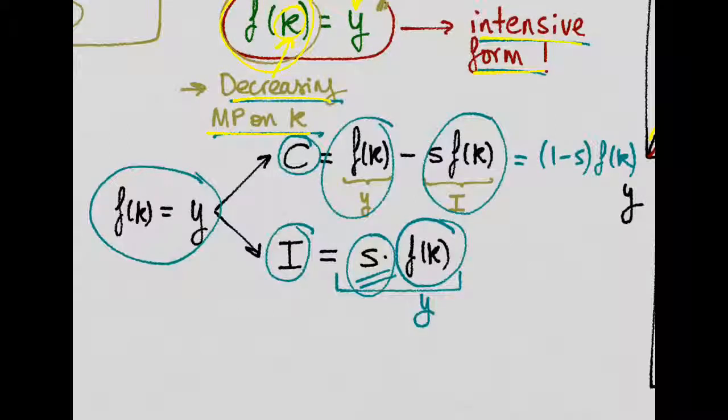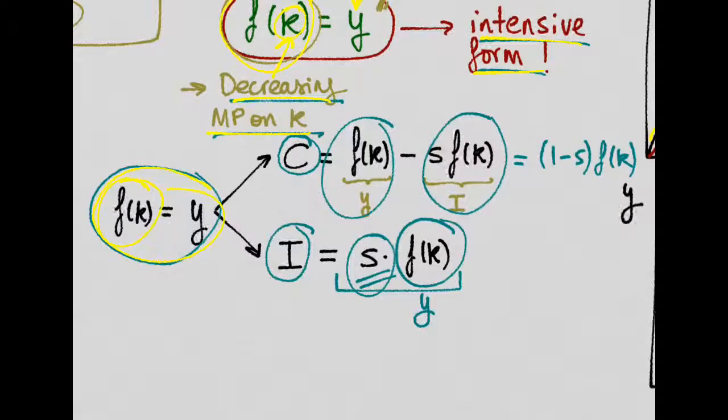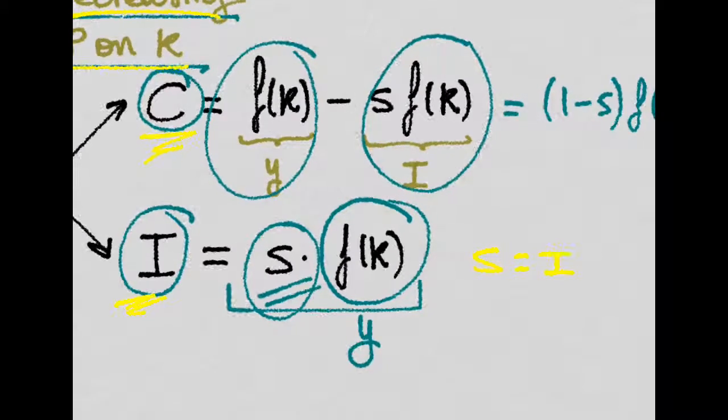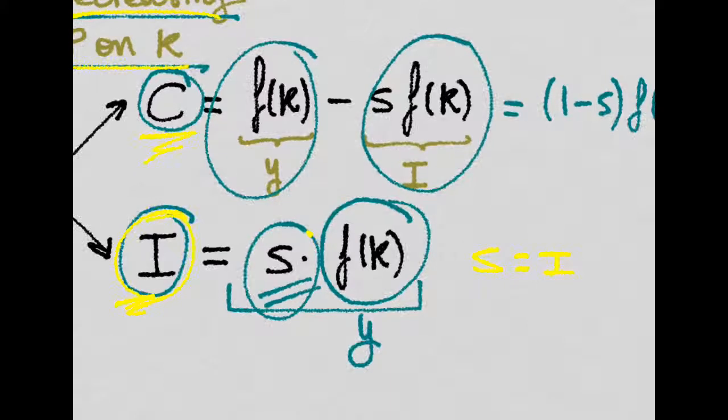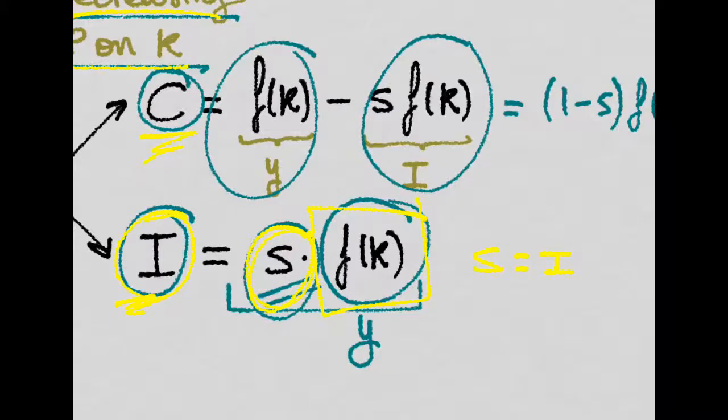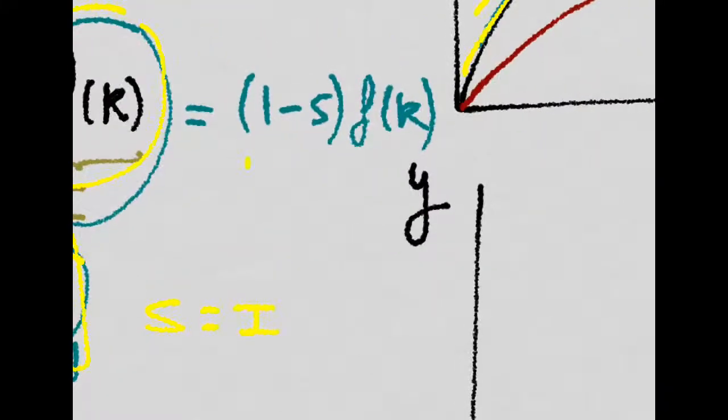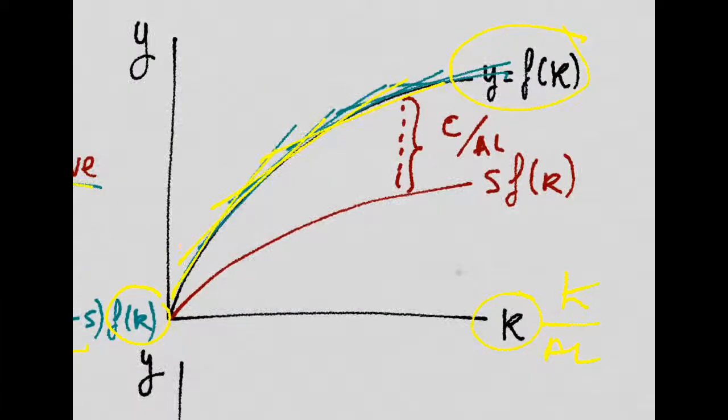If we say that one unit of production given by the production function could either be consumed or invested, and if all that is saved is also invested, we could say that the investment is just the savings rate times what we produce, the production function. And we will consume what we produce minus what we invest, which is just equal to 1 minus small s times output. Graphically, this vertical distance is just the savings rate times the production function, which is the actual investment in the economy. And the difference between the actual investment and the production function will be equal to consumption over effective labor. So this is investment, and this is consumption.